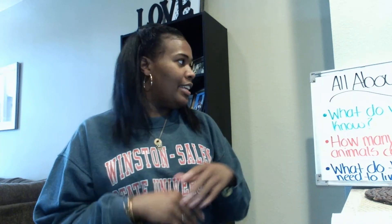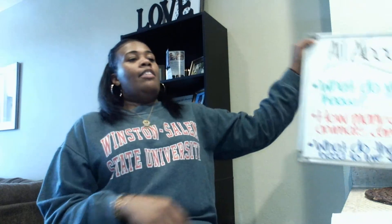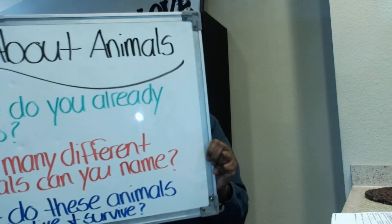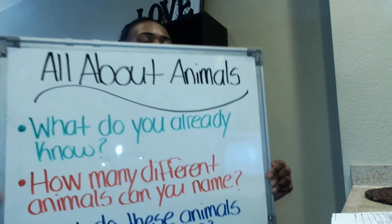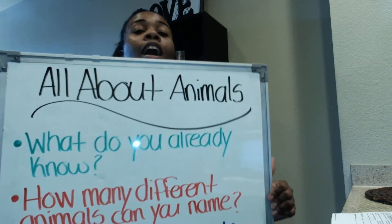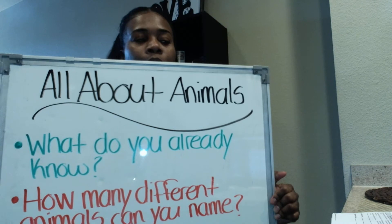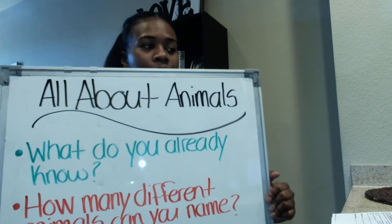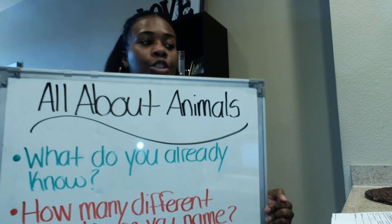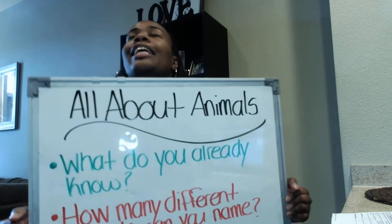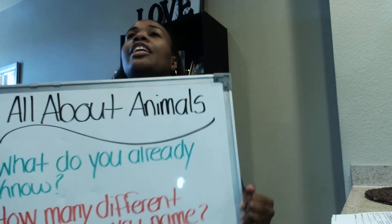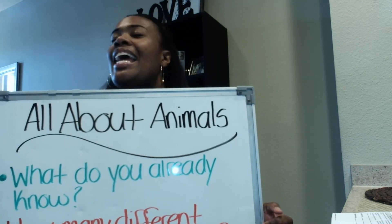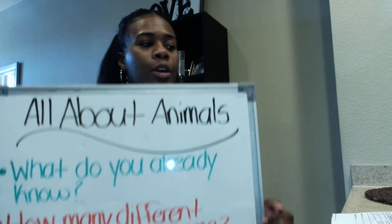Here is today's activity. I have my board with everything written down so I won't forget. All about animals — the very first thing I want you guys to do: what do you already know? Tell me every single thing you know about animals. Any animal in the world.